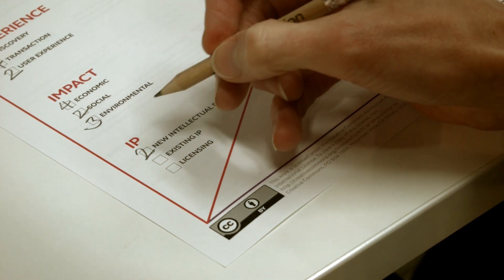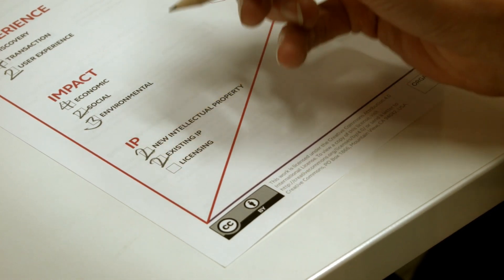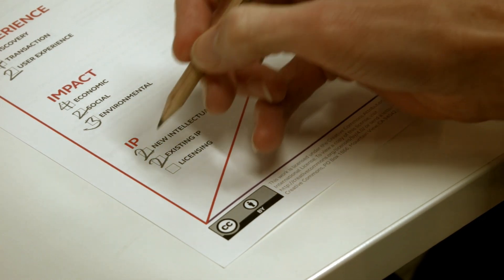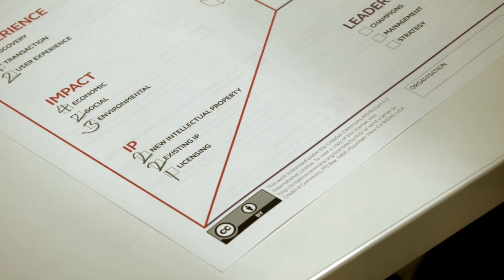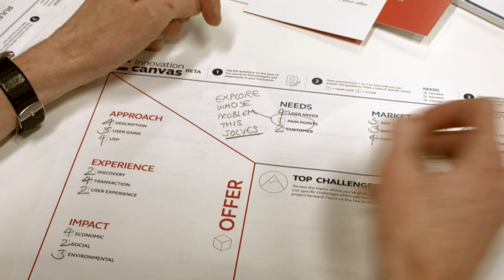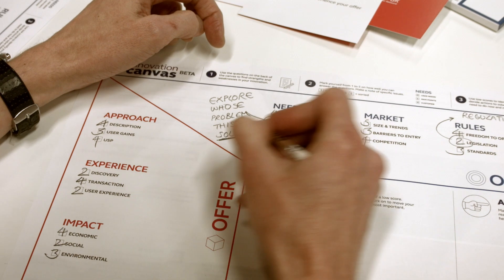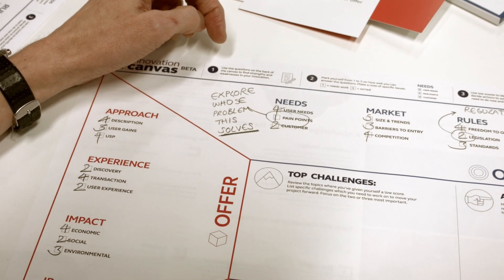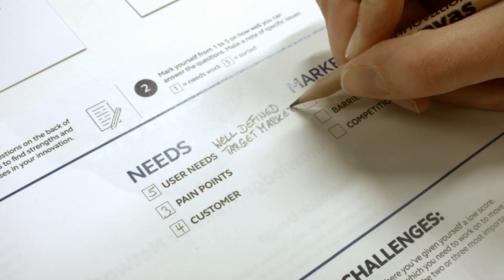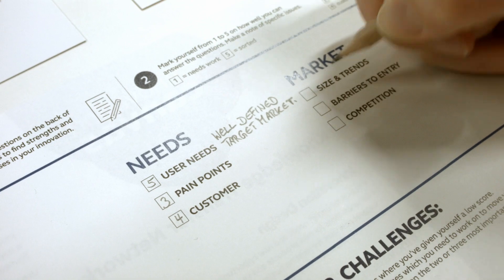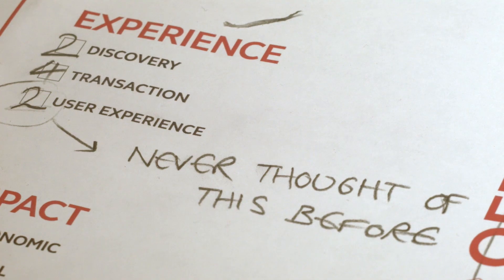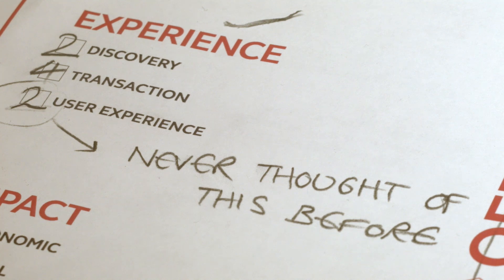Don't agonise about this. The numbers are a quick way of assessing how well you can deal with each topic. Make a note on the canvas of the specific reasons you've decided on a particular score. This is especially important in the case of low scores — you're trying to identify gaps and weaknesses that need attention.